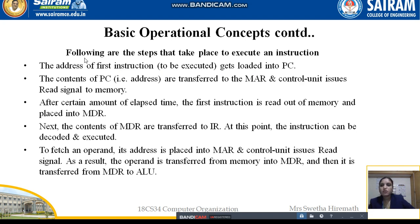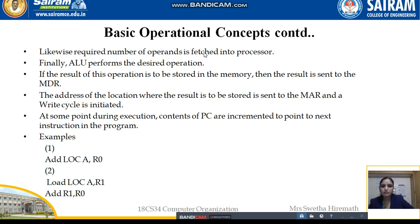To summarize: the address of the first instruction to be executed is loaded in PC. The contents of the PC are transferred to the MAR and the control unit issues a read signal to memory. After some elapsed time, the first instruction is read from memory and placed into MDR. The contents of MDR are then transferred to IR, where the instruction is decoded and executed. To fetch an operand, its address is placed in MAR, the control unit issues a read signal, and the operand is transferred from memory into MDR, then from MDR to the ALU. Finally, if the result is to be stored in memory, it is sent to MDR, the result's address is sent to MAR, and a write cycle is initiated. The PC is also incremented to point to the next instruction.